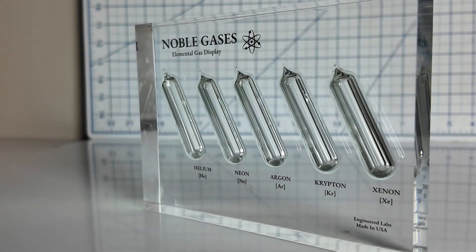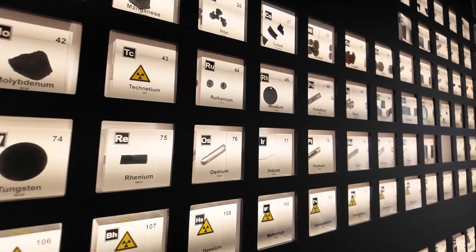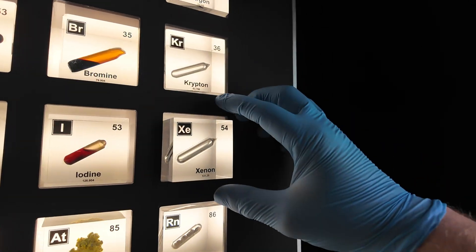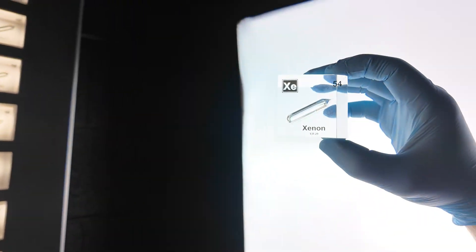These elements on the right side of the periodic table are also known as the noble gases. These gases have some special properties due to how their electrons are organized in their orbitals.